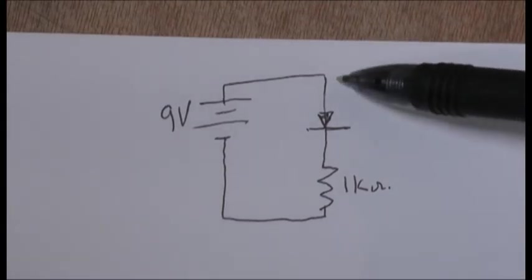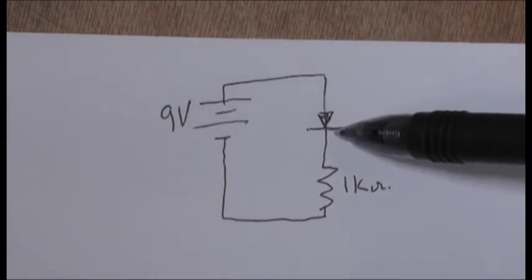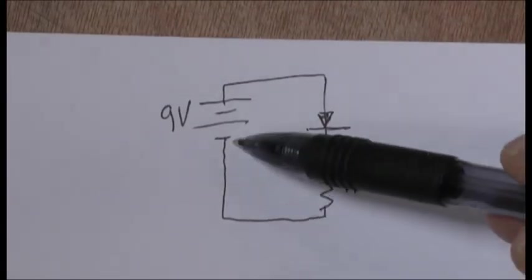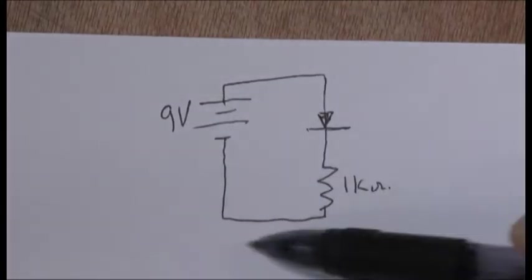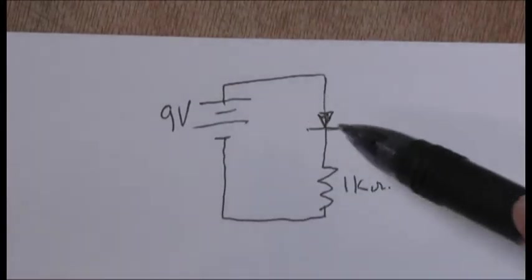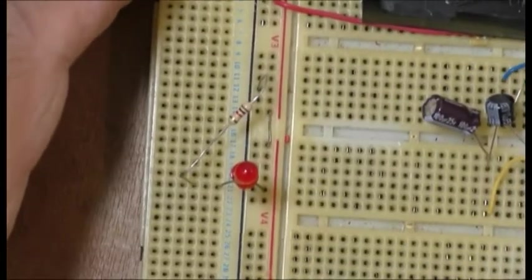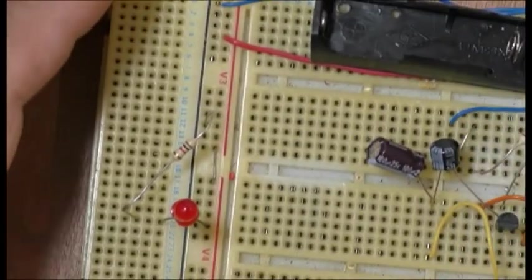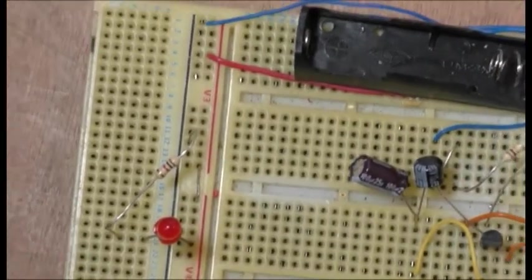So first of all, I'm going to connect this up like this where the LED is connected through a resistor, a 1kΩ resistor, to the negative side of the battery. This is just to prove that the LED is working. So here we go, this is the connection here. I've made it as simple as I possibly can.